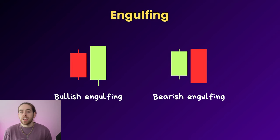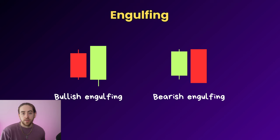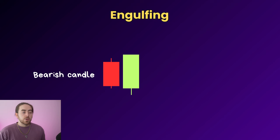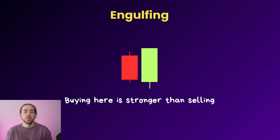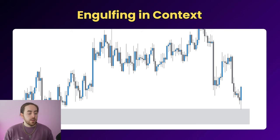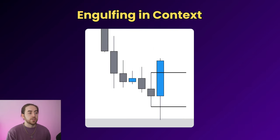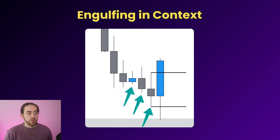Now onto pattern number two — one of my favourites — the engulfing pattern: the bullish engulfing and the bearish engulfing. A bullish engulfing is where we have a bearish candle that is totally engulfed or absorbed by a bullish candle, telling us that buying at this price area is stronger than the selling. We use engulfing patterns in context — here we have a demand zone with the retest followed by a large bullish candle that has absorbed the entire previous candle and the candles before it, swallowing an entire range with one individual bullish candle.